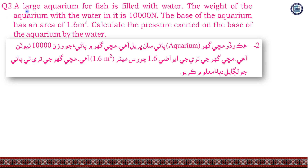Question 2: A large aquarium for fish is filled with water. The weight of the aquarium with the water in it is 10,000 newtons. The base of the aquarium has an area of 1.6 square meters. Calculate the pressure exerted on the base of the aquarium by the water.